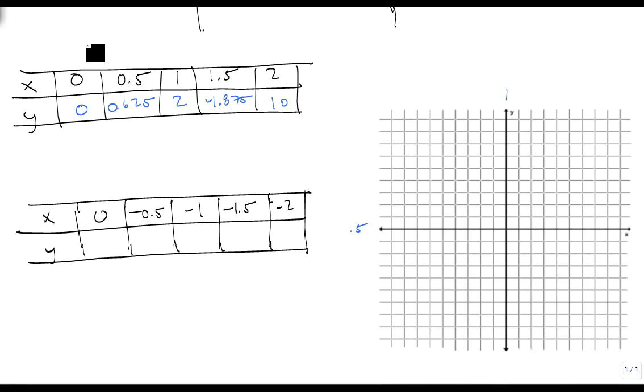And because this was symmetric over the origin, all I need to do is change all of my x's to negatives and change all of my y's to negatives, and I can get my graph.